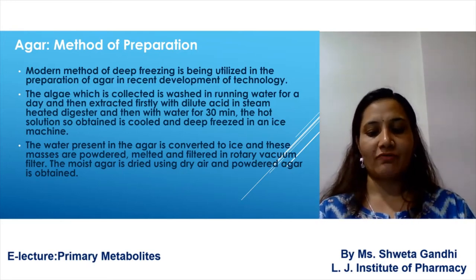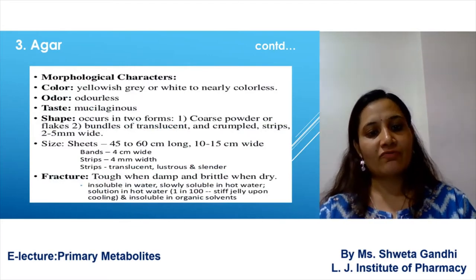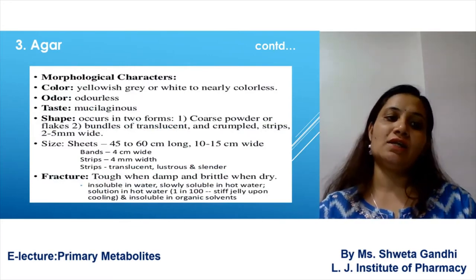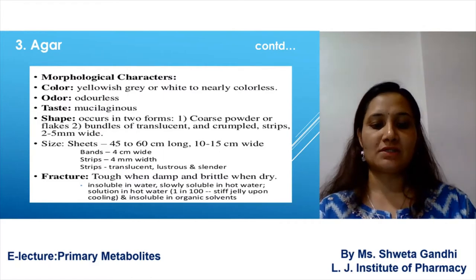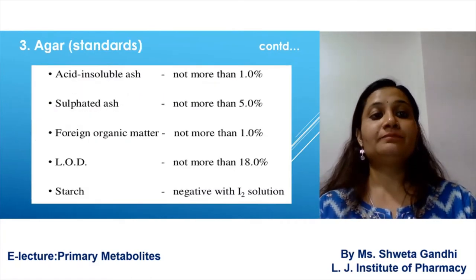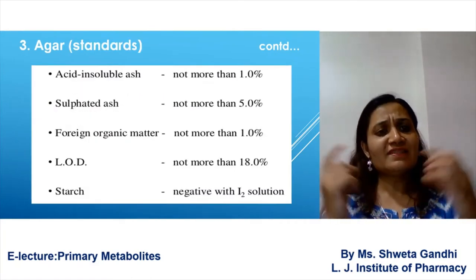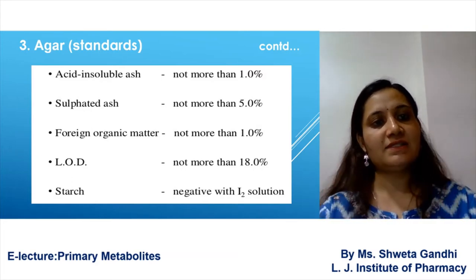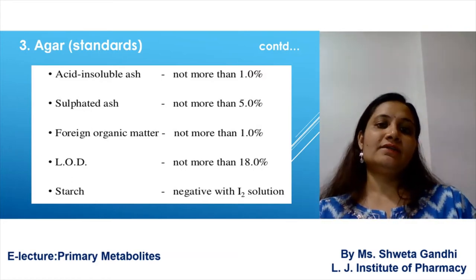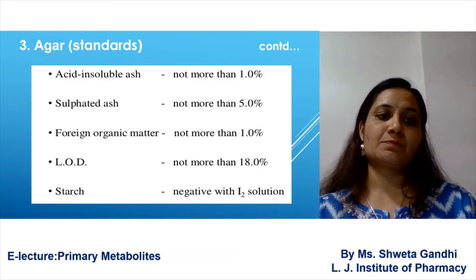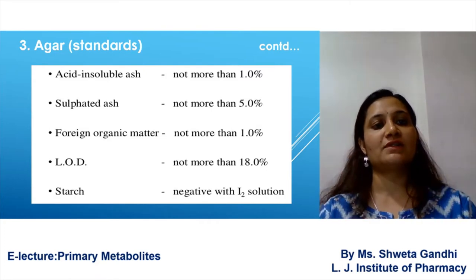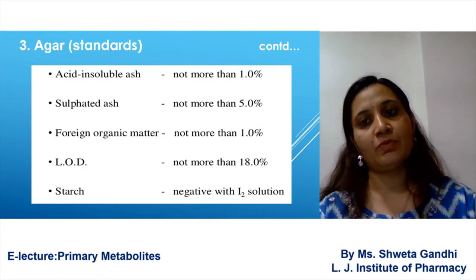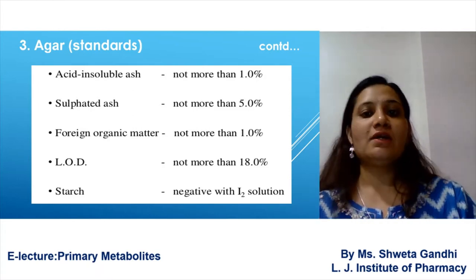The morphological characters include color, odor, shape, taste, and fracture — meaning their structure standard. These are the basic standards according to the IP or USP that you have to follow for agar. For example, acid-insoluble ash should not be more than 1%. All this comes under the physical evaluation of a crude drug.